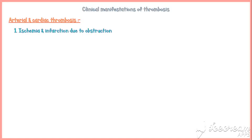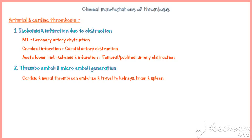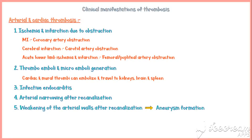Clinical manifestations of arterial and cardiac thrombosis include ischemia and infarction due to obstruction — for example, myocardial infarction due to coronary artery obstruction, cerebral infarction due to carotid artery obstruction, and acute lower limb ischemia due to femoral or popliteal artery obstruction. Thromboemboli and microemboli can travel to organs such as kidneys, brain, and spleen. Infective endocarditis is another manifestation. Recanalization may cause arterial narrowing and weakening of the vessel wall leading to aneurysm formation, sometimes infected by bacteria forming mycotic aneurysms. Arterial thrombi also predispose to atheroma formation.